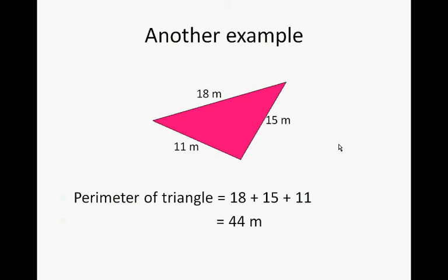So to sum it up, to calculate the perimeter of the triangle we just simply add all the sides together. Thank you very much.